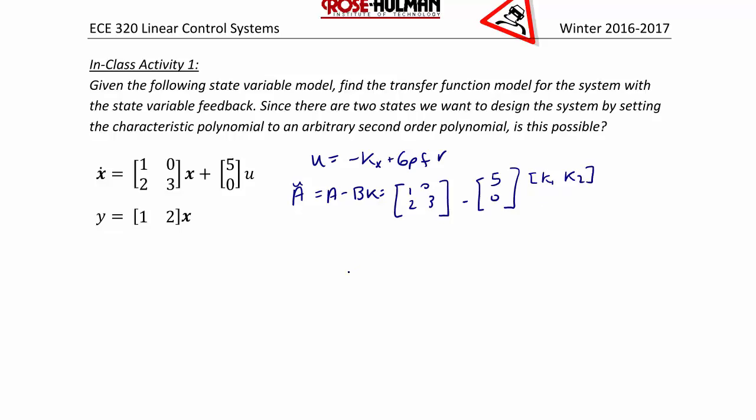And a tilde is equal to [1 minus 5k1, negative 5k2; 2, 3].